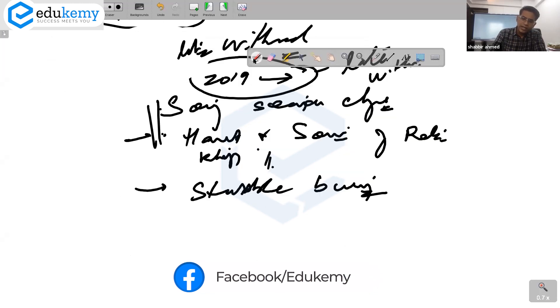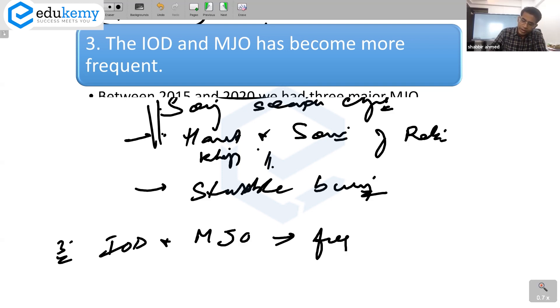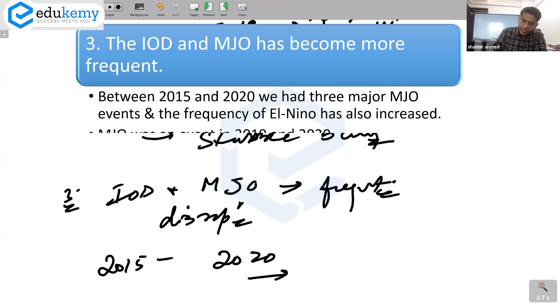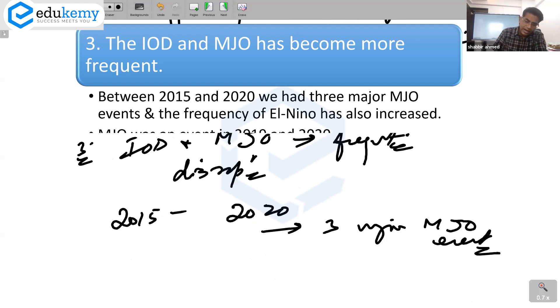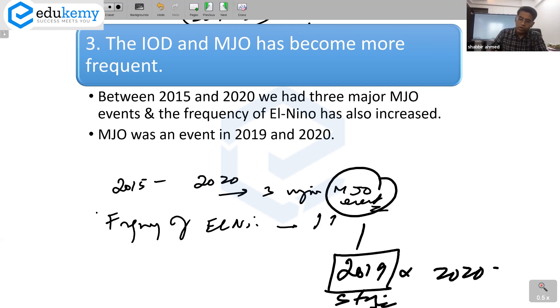Then you can say the third is the IOD and MJO, these have become more frequent. In fact, between 2015 and 2020, they have had three major MJO events. And the frequency of El Nino has also increased. 2019 had MJO and 2020 had it. 2019 MJO was a very strong rainfall event. But 2020, right now, it is a mild one. But 2020 also has the MJO event.